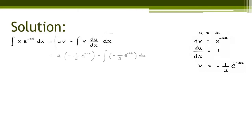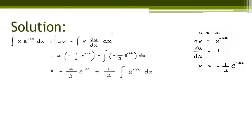We get x multiplied with negative 1 over 2 e to the power of negative 2x, subtract with the integral of negative 1 over 2 e to the power of negative 2x. This gives us negative x over 2 e to the power of negative 2x. Then we bring out the constant, making it plus 1 over 2 times the integral of e to the power of negative 2x dx. Integrating that gives us negative 1 over 2 e to the power of negative 2x plus c.